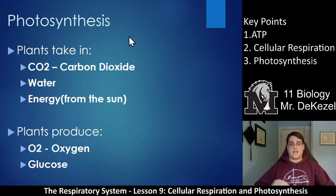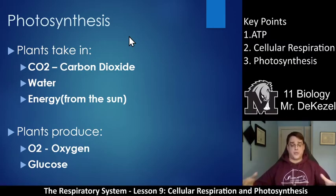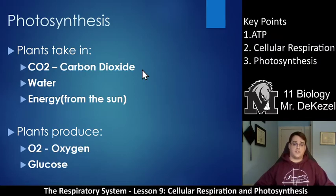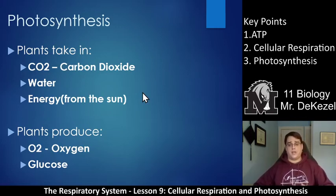Photosynthesis is the exact opposite process of cellular respiration. Plants take in carbon dioxide, they take in water from the soil, and they take in energy from the sun to produce oxygen and glucose. That glucose is what they use to build themselves up, to get stronger and to get larger, to create stems and fruits and vegetables. You'll notice that this slide is the exact opposite of the cellular respiration slide. Cellular respiration had animals taking in oxygen and glucose and producing carbon dioxide, water, and energy in the form of ATP.